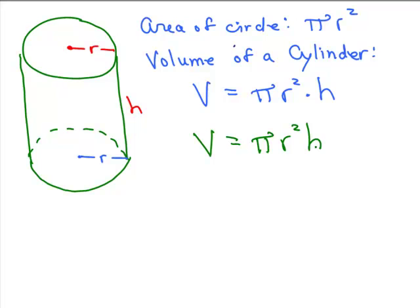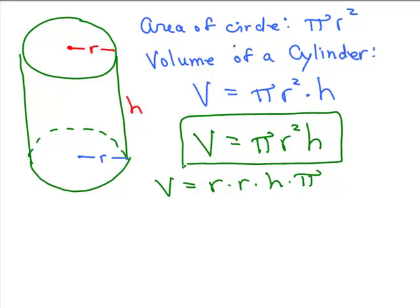And this is usually just written as πr²h. Now, of course, it doesn't matter the order you multiply those in. You could say the volume is r × r × h × π. That's really all the same thing. But that's what we want to use. The volume for a cylinder is πr²h. That's the way you're usually going to see it written.